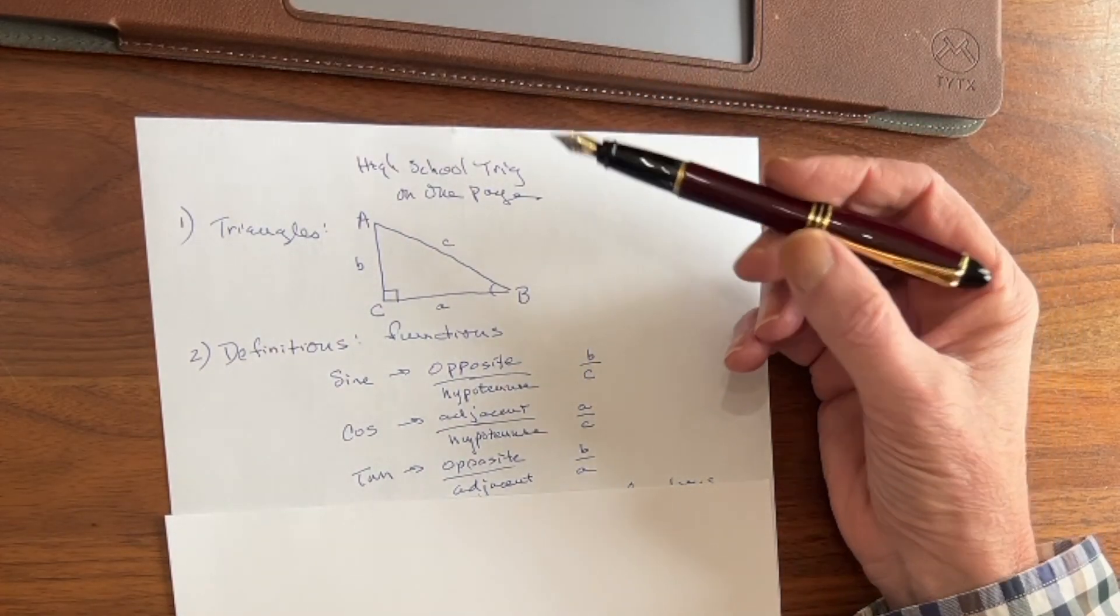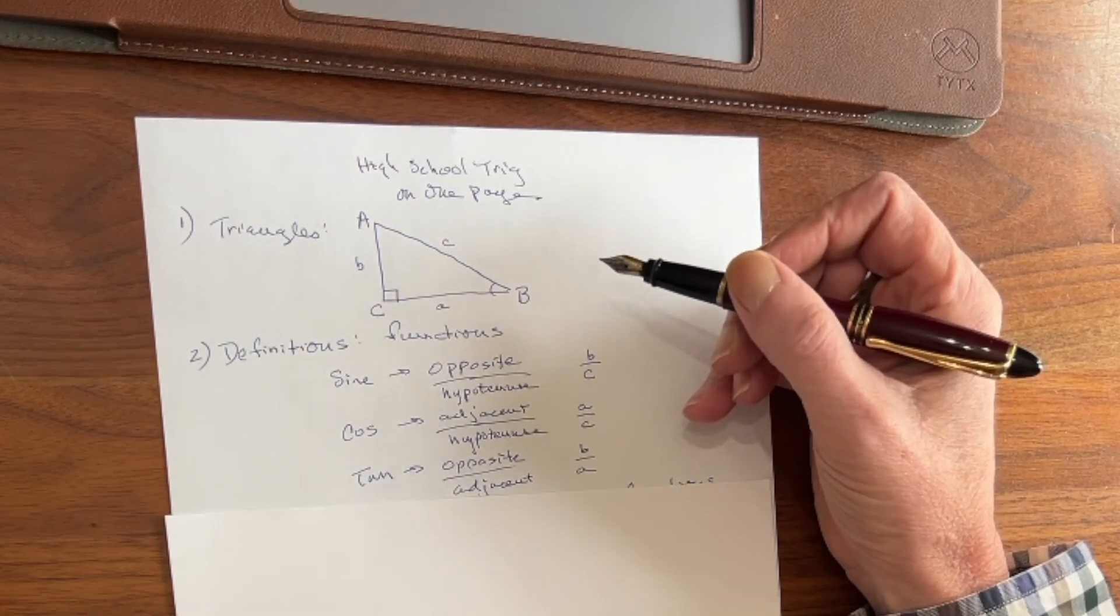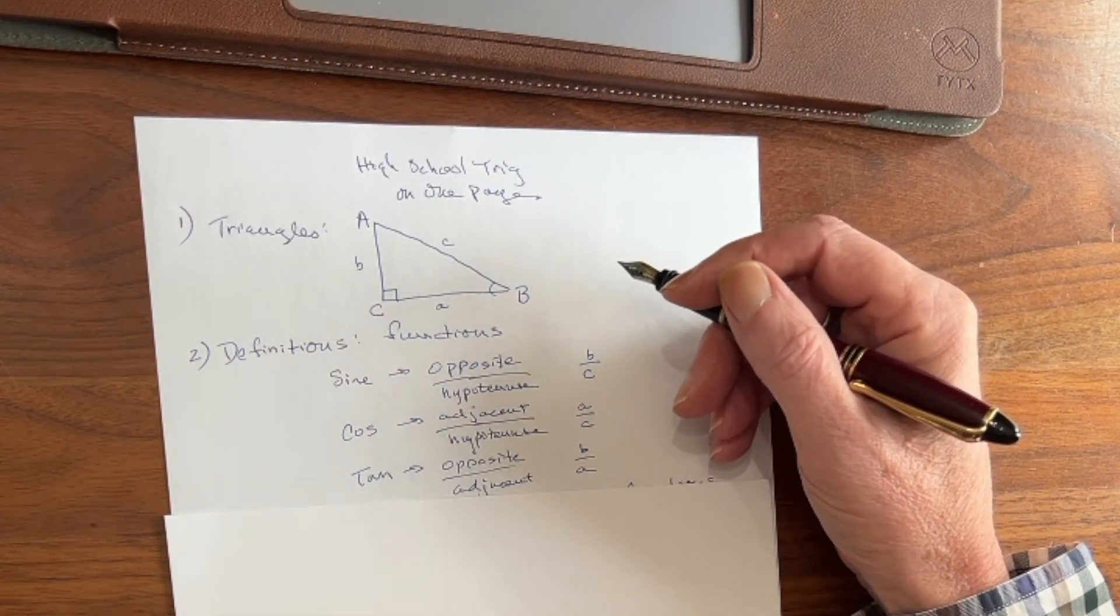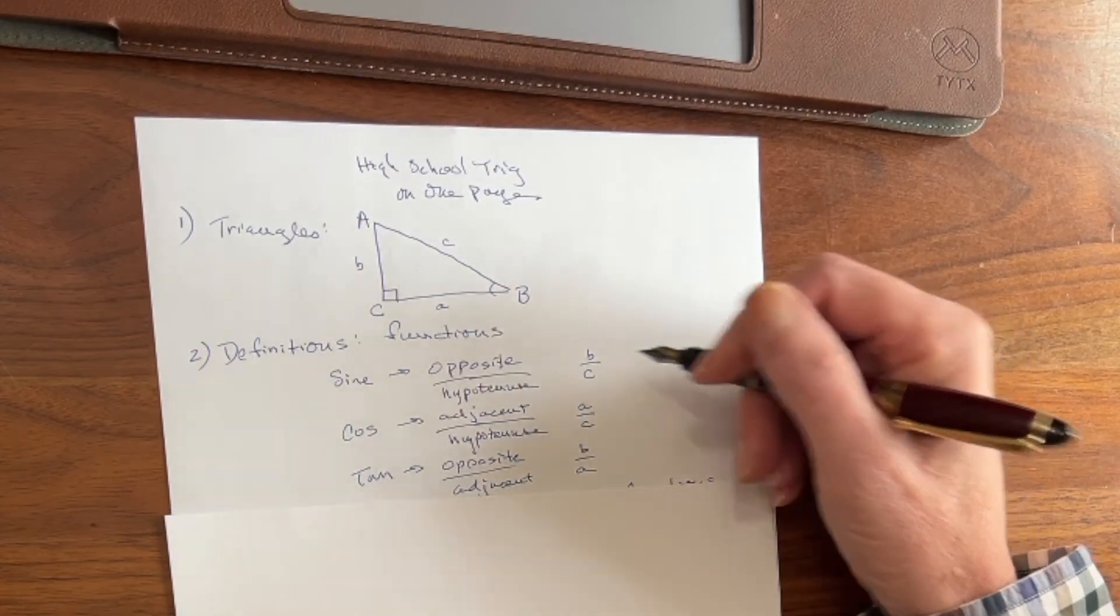Well, how do we remember these things? Some people use the term SOH-CAH-TOA: sine opposite hypotenuse, cosine adjacent hypotenuse, tangent opposite over adjacent.